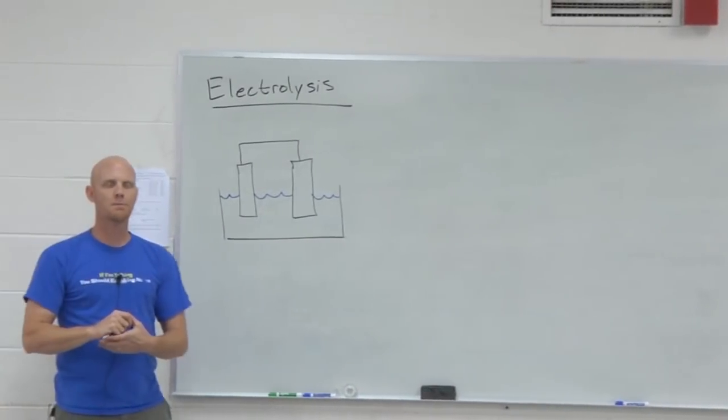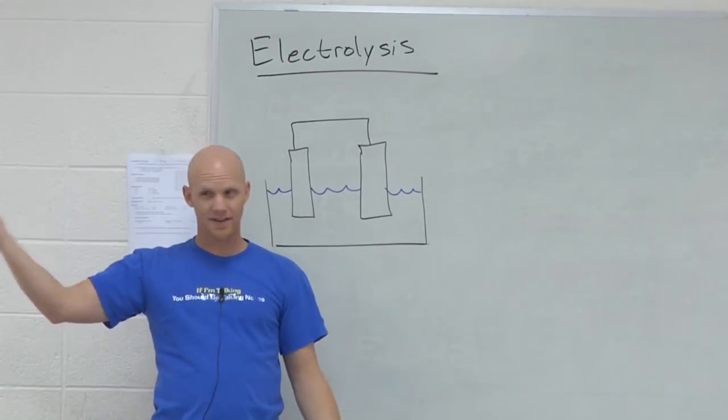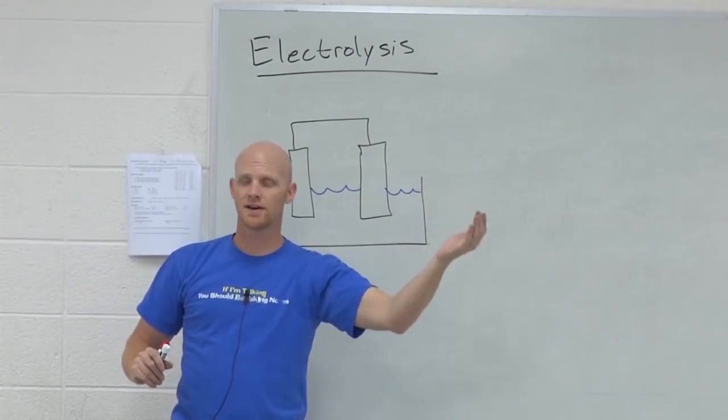Okay, so we talked earlier about both types of electrochemical cells: galvanic cells, or voltaic cells—same difference—and then versus electrolytic cells.